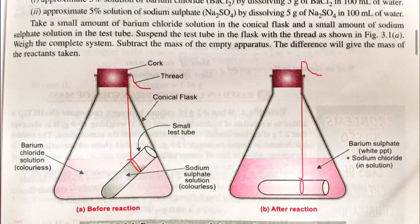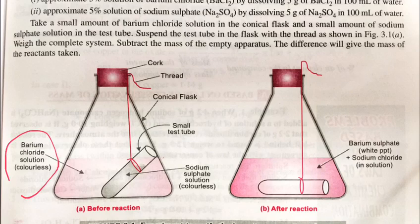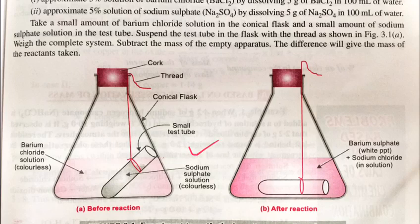Now further taking one more example. I am taking example of barium chloride and sodium sulfate. In this slide we are taking solution of barium chloride and sodium sulfate. Both are colorless solution. In the test tube we are taking sodium sulfate and in the big flask we are taking barium chloride. We will cork the flask so that there is no loss of the mass.